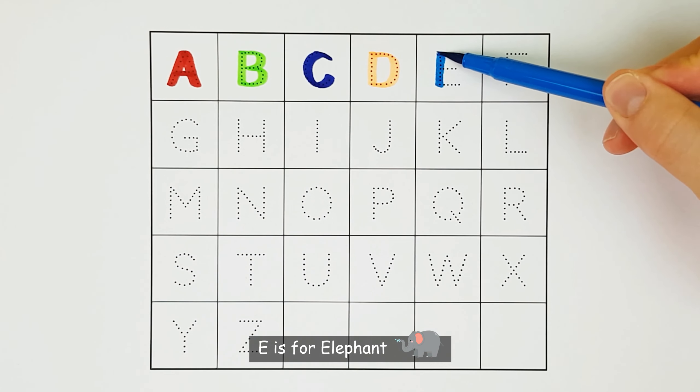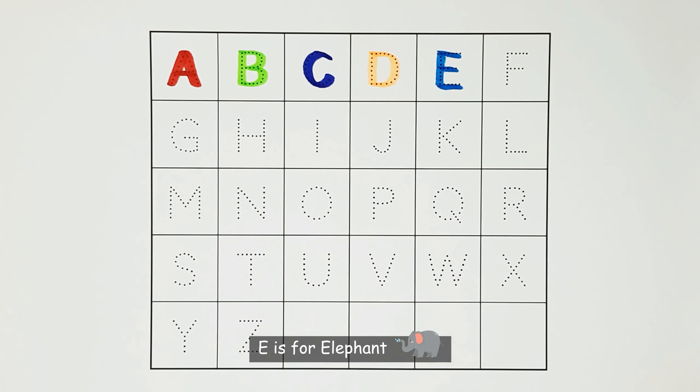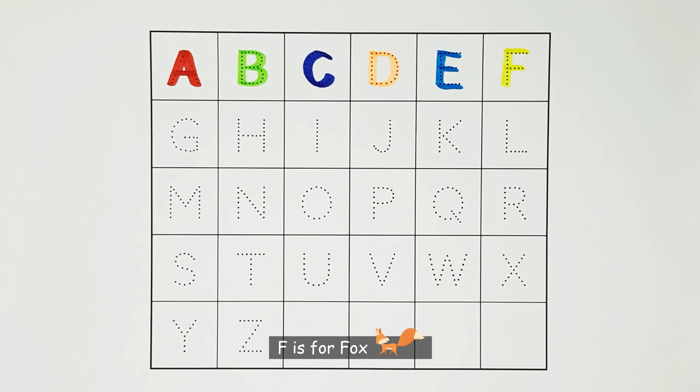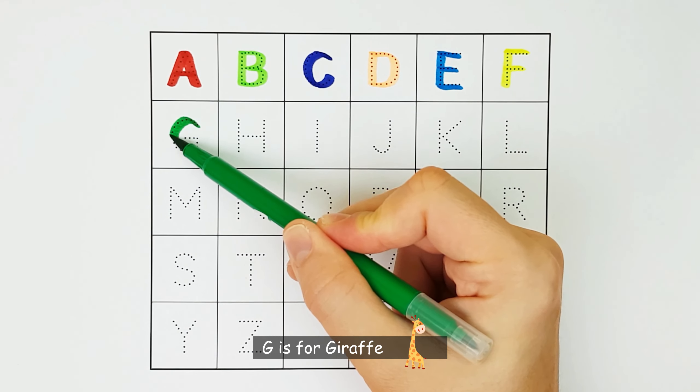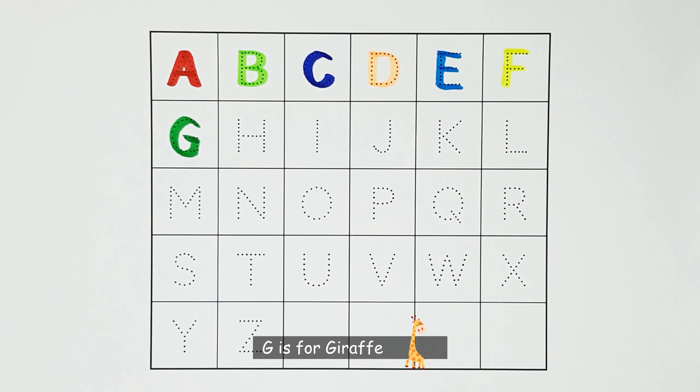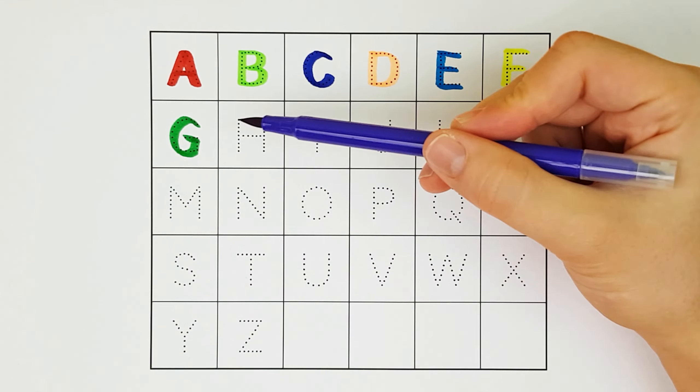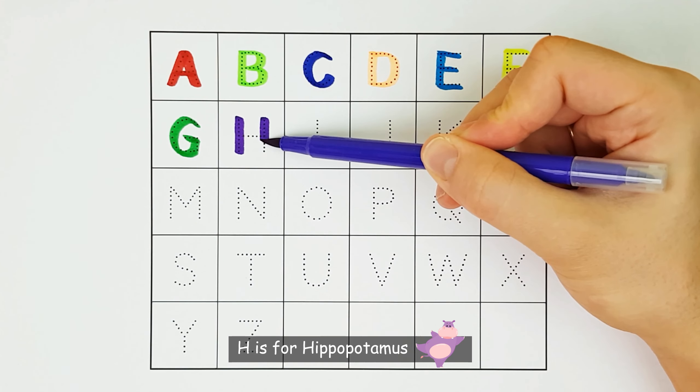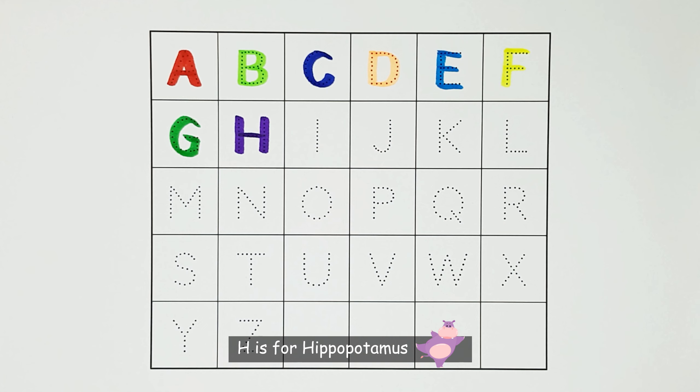E. E is for Elephant. E. F. F is for Fox. F. G. G is for Giraffe. G. H. H is for Hippopotamus. H.